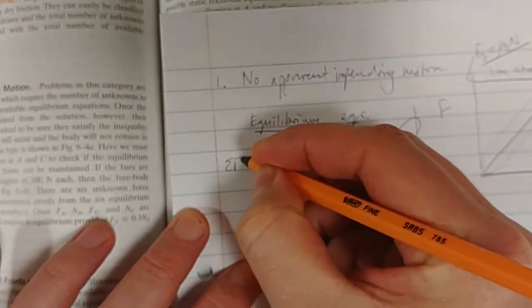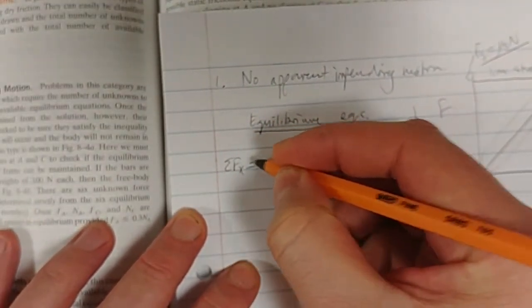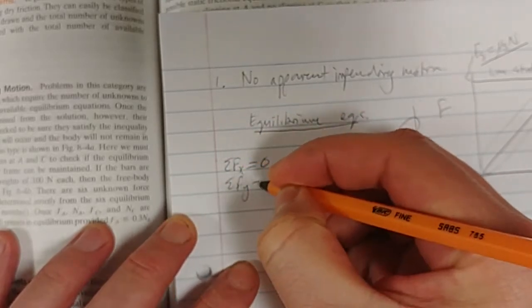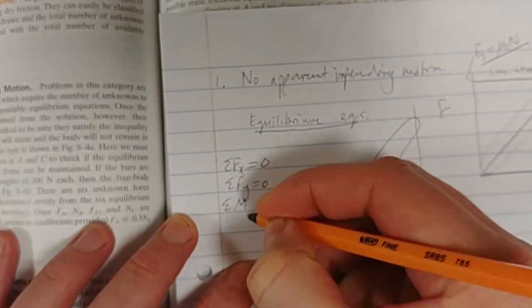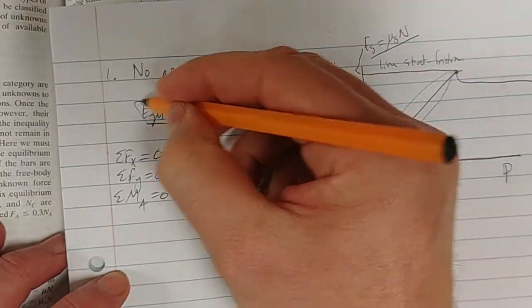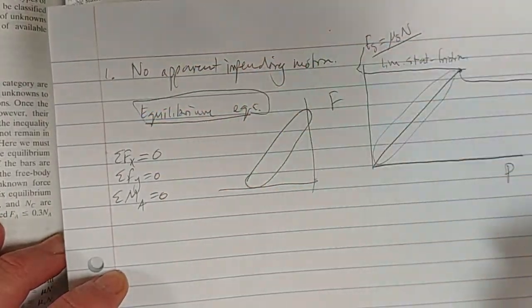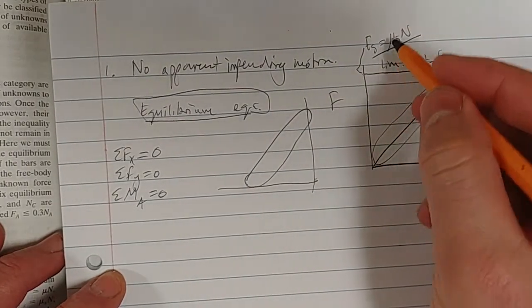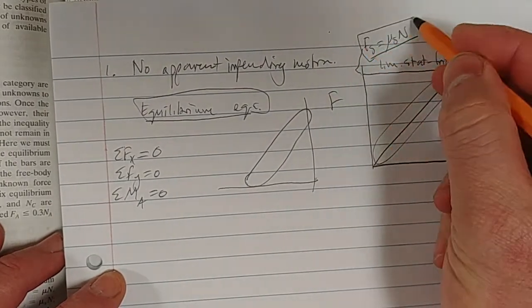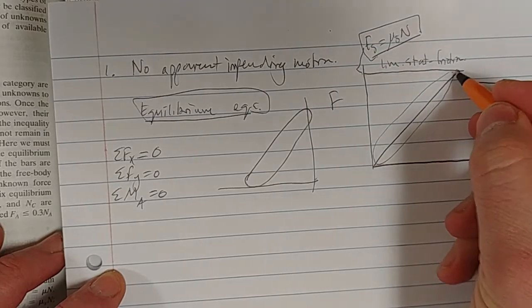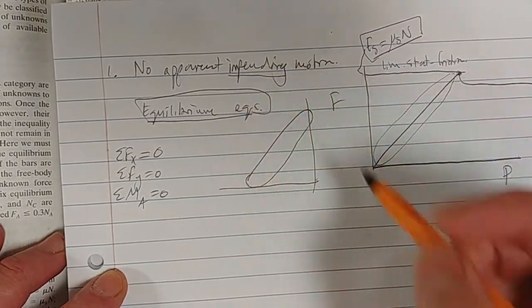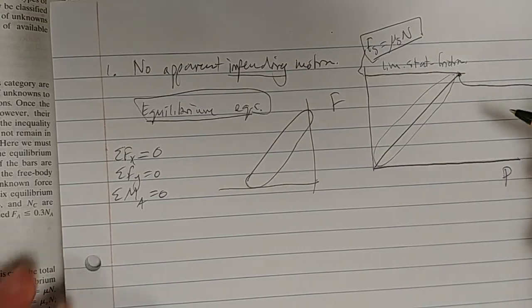That is: sum of forces in x equals zero, sum of forces in y equals zero, sum of moments about some point equals zero. We are only allowed to use the equilibrium equations because we're not at impending motion. That limiting static friction equation only applies when we are at impending motion.